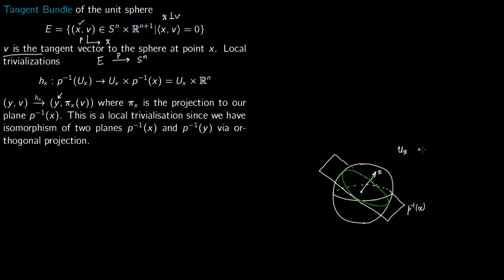You take a point Y which lies in the neighborhood of X. At that point Y you have tangent vectors V. You can project these tangent vectors orthogonally onto the plane P^{-1}(X), and this gives a local trivialization because there is a correspondence. You can read about this in Hatcher, but the key point is that for any Y in the neighborhood you can carry out the same procedure.